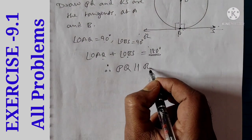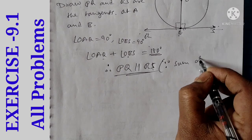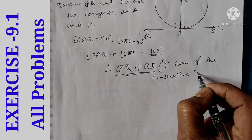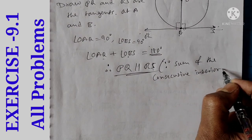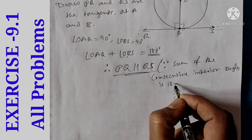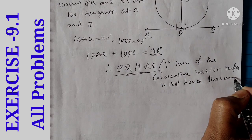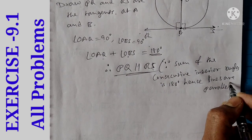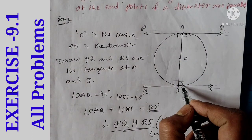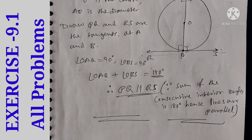Therefore, PQ is parallel to RS. Since the sum of the consecutive interior angles is 180 degrees, hence the lines are parallel. The two consecutive interior angles confirm the parallel lines — so that's why it is proved. This is the end of this exercise.